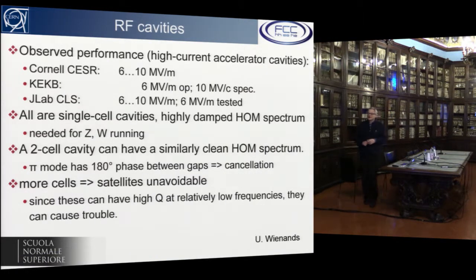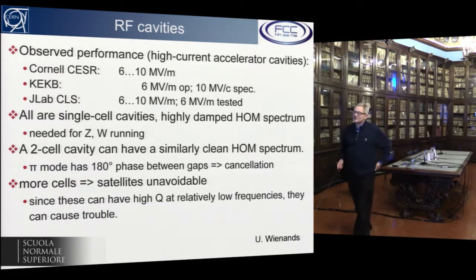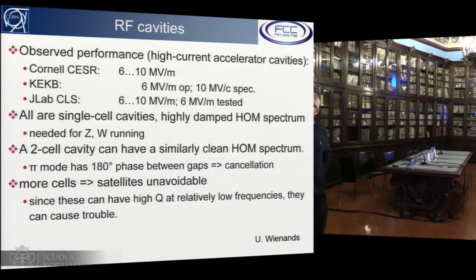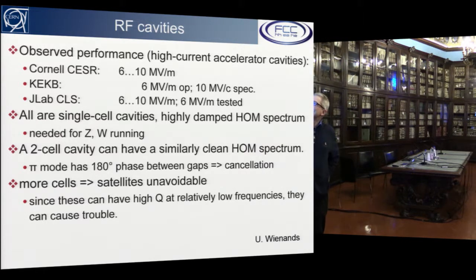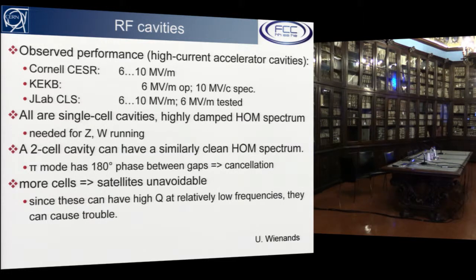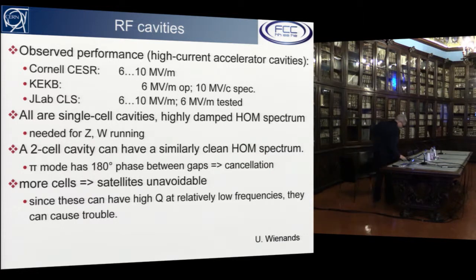RF cavities are the key component of the FCC-EE. Performance was summarized by Uli Wienands. High-current cavities at Cornell, CEBAF, KEK-B, and JLab achieve gradients between 6 and 10 megavolt per meter, all using single-cell cavities with highly damped HOM spectra. For the very high current in the Z/W running, Uli argues for two-cell cavities rather than multi-cell, because they have almost the same HOM spectra as single-cell — the second (π) mode does not couple to the beam.